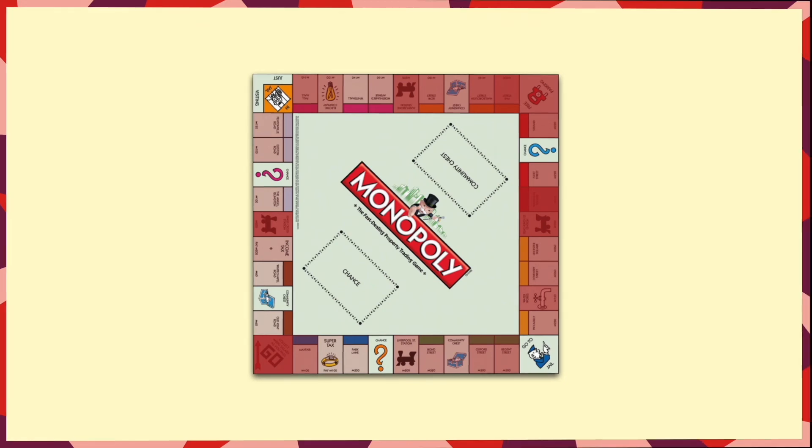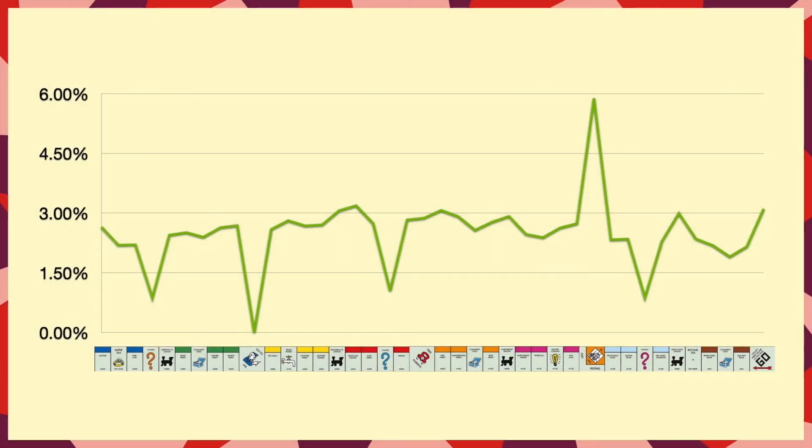Now, let's look at a graph to see exactly what's going on. Well, the spikes here are the jail and chance squares, but it appears to agree with what we saw. The oranges and reds appear to be the highest, and the light blues and browns are definitely the lowest.